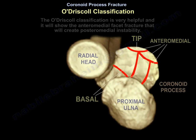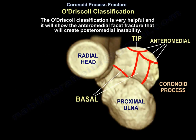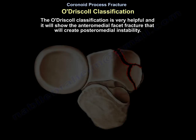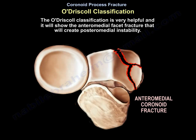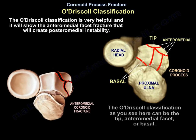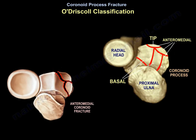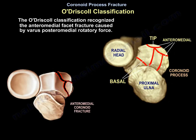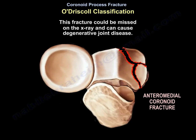The O'Driscoll classification is very helpful and shows the anteromedial facet fracture, which creates posteromedial instability. Its classification can be the tip, the anteromedial, or basal. The O'Driscoll classification recognized the anterior medial facet fracture caused by varus posteromedial rotatory force. This fracture can be missed on x-ray and can cause degenerative joint disease.